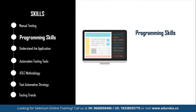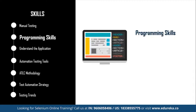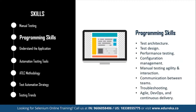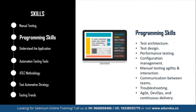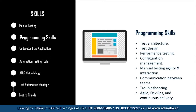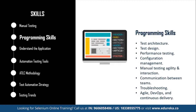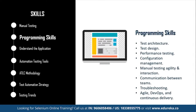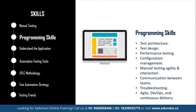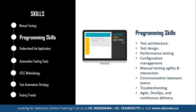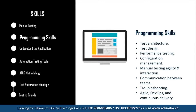There are also a few technical skills a manual tester should master to become a brilliant automation testing engineer, such as test architecture, test design, performance testing, configuration management, manual testing agility, interaction and communication between teams, troubleshooting, agile DevOps, and continuous delivery. The combination of all these skills can help you transition to automated testing easily and smoothly.